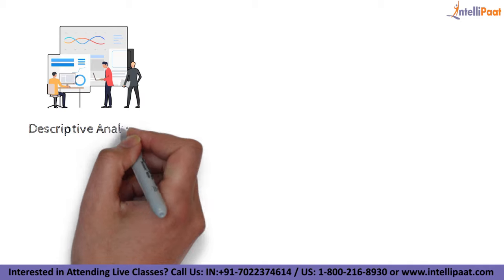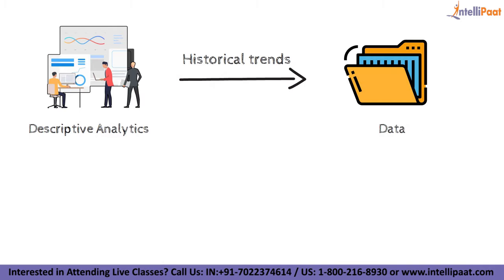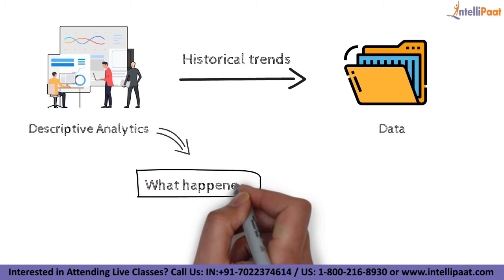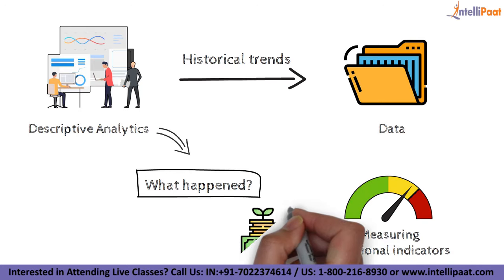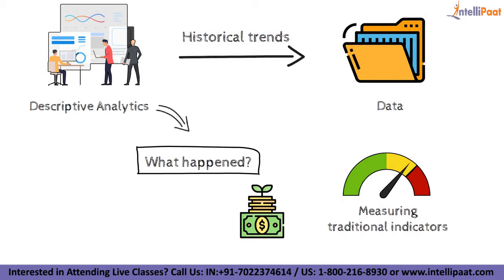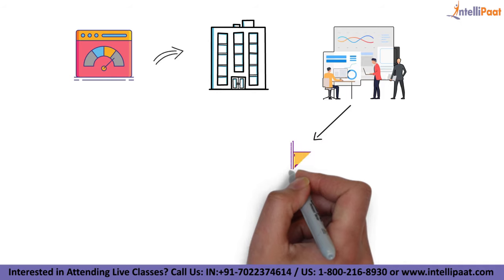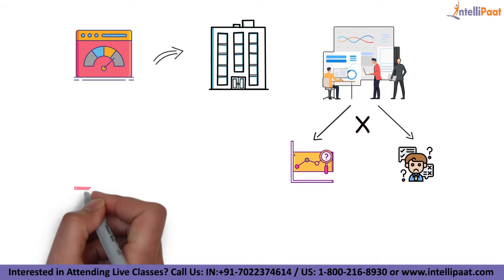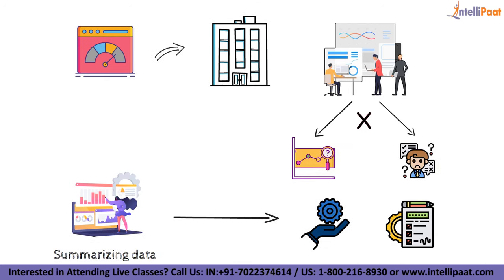Generally, this process begins with descriptive analysis. This is the process of describing historical trends in data. Descriptive analytics aims to answer the question: what happened? This often involves measuring traditional indicators such as return on investment. The indicators used will be different for each industry. Descriptive analytics does not make predictions or directly inform decisions — it focuses on summarizing data in a meaningful and descriptive way.